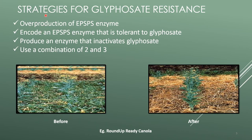The strategies for glyphosate resistance include: overproduction of the EPSPS enzyme, encoding an EPSPS enzyme that is tolerant to glyphosate, producing an enzyme that inactivates glyphosate, or using a combination of approaches two and three.